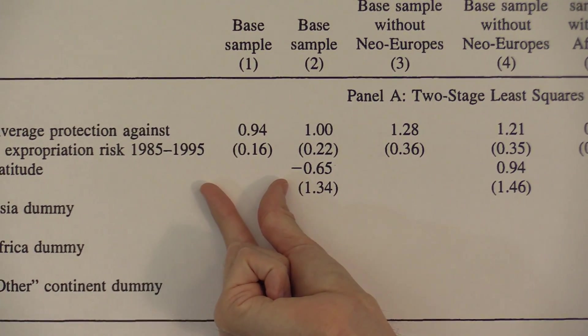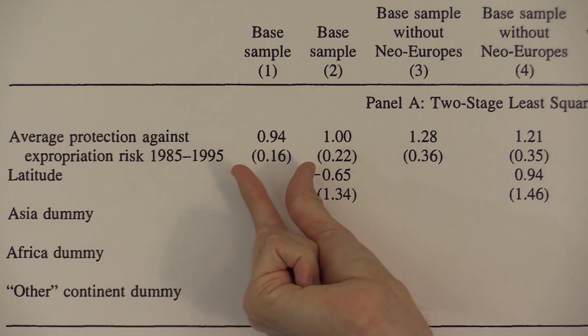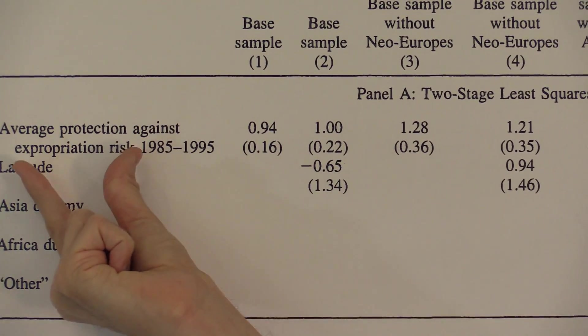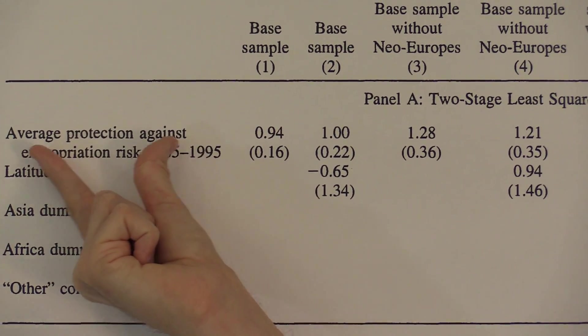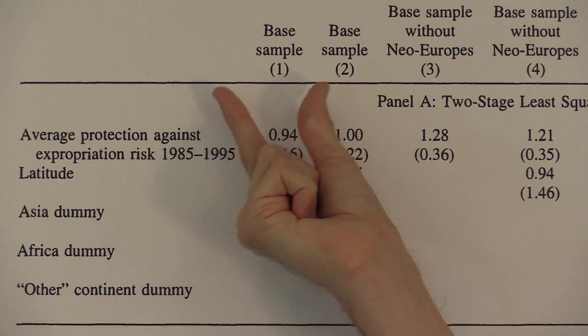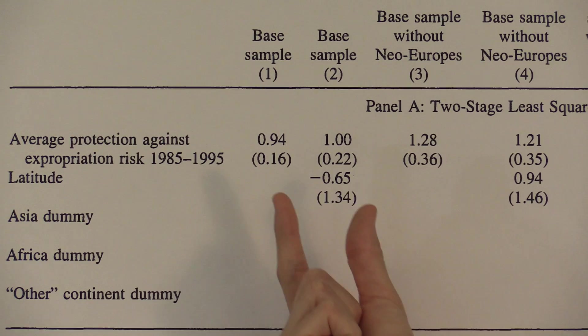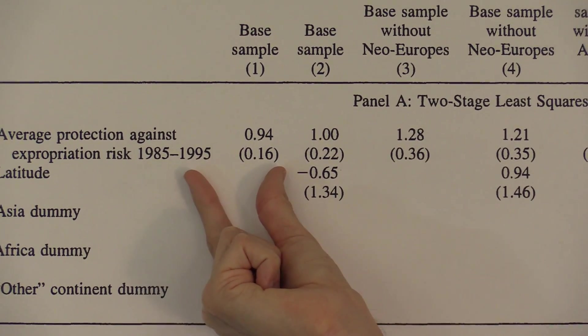So panel A is labeled two stage least squares. Remember, that's a key word for instrumental variables analysis. So here we're looking at the coefficient on average protection against expropriation risk, and that's 0.94. Now this is our treatment variable. And our outcome variable here is log GDP per capita.